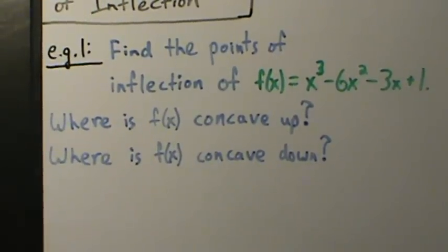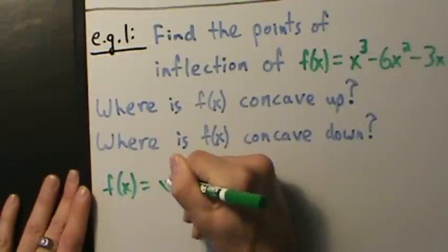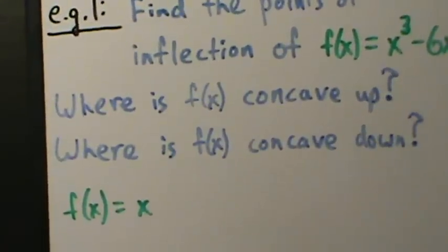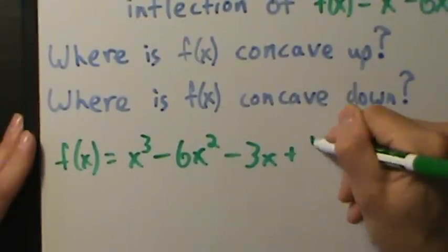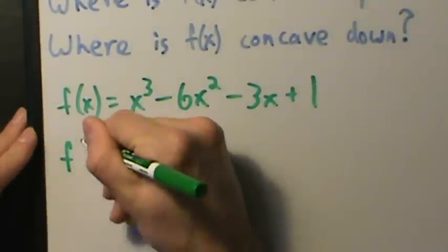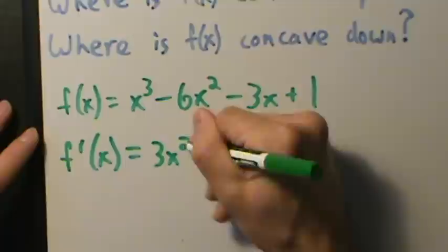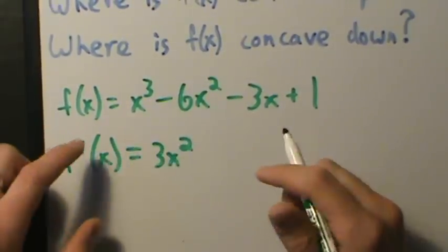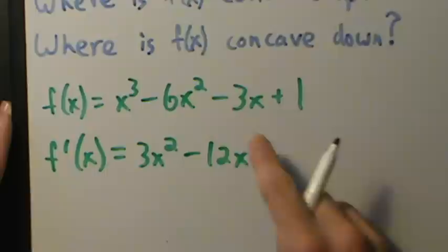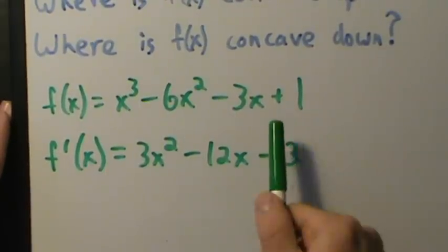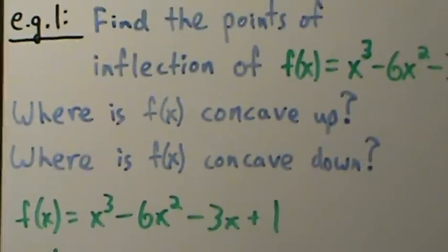So let's rewrite f(x) = x³ - 6x² - 3x + 1. The first derivative f'(x): derivative of x³ is 3x², derivative of -6x² is -12x, derivative of -3x is -3, and the constant 1 has derivative 0. So f'(x) = 3x² - 12x - 3.